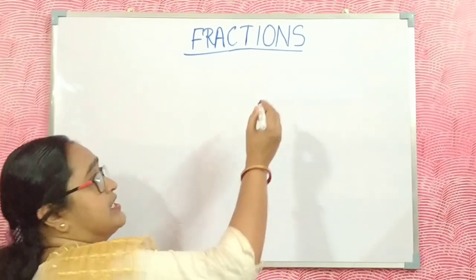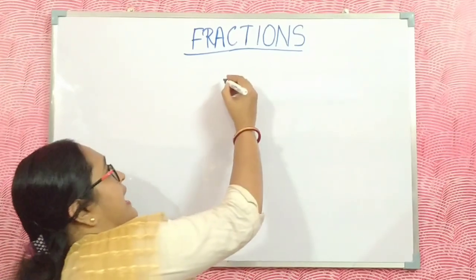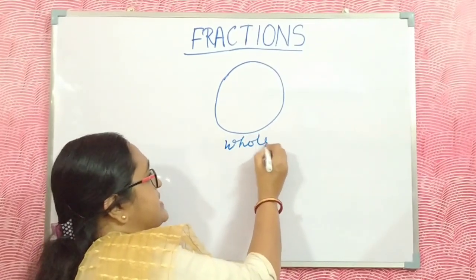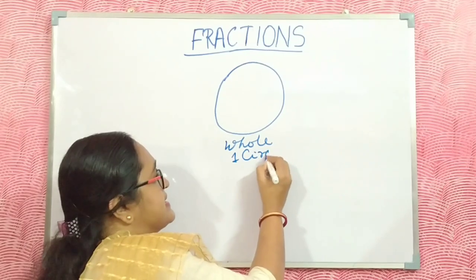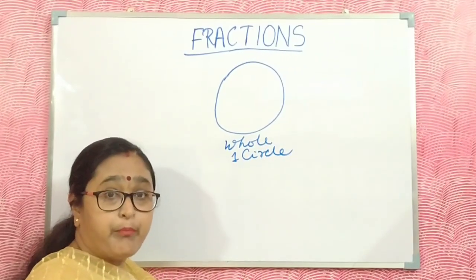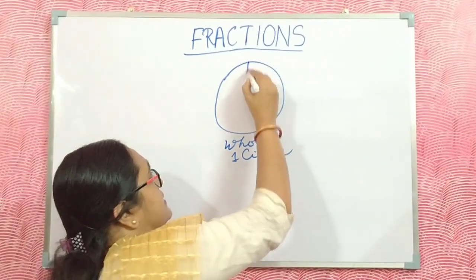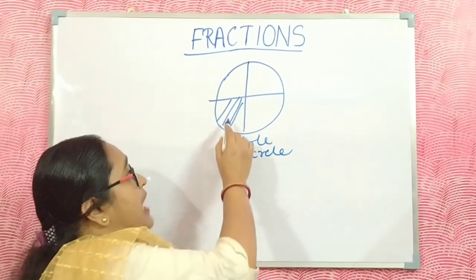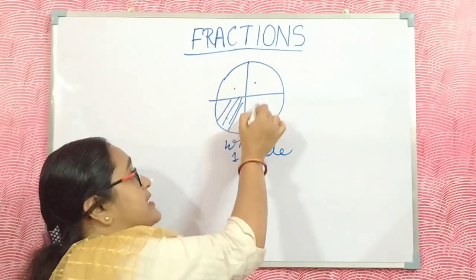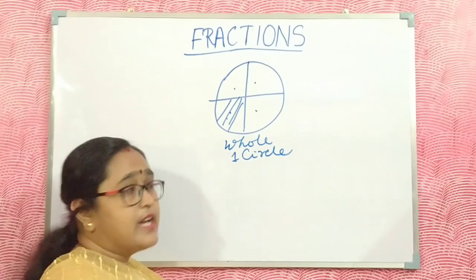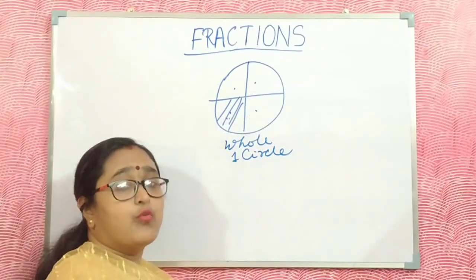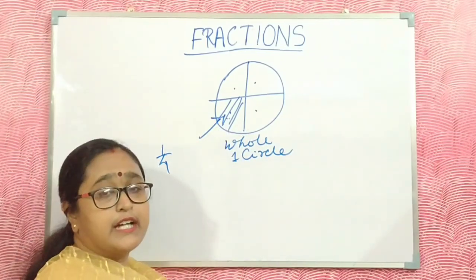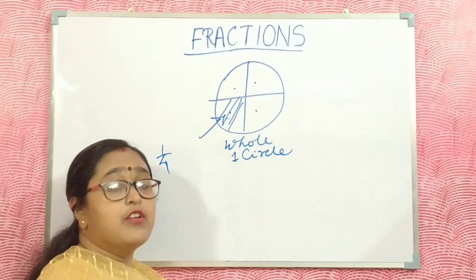What is a Fraction? A Fraction is the part of a whole. I take a whole circle here — this is the whole, meaning one circle. The Fraction is a part of a whole. If I draw a part like this, and divide it into four parts, the second part is called one-fourth. The part of a whole is called the Fraction.